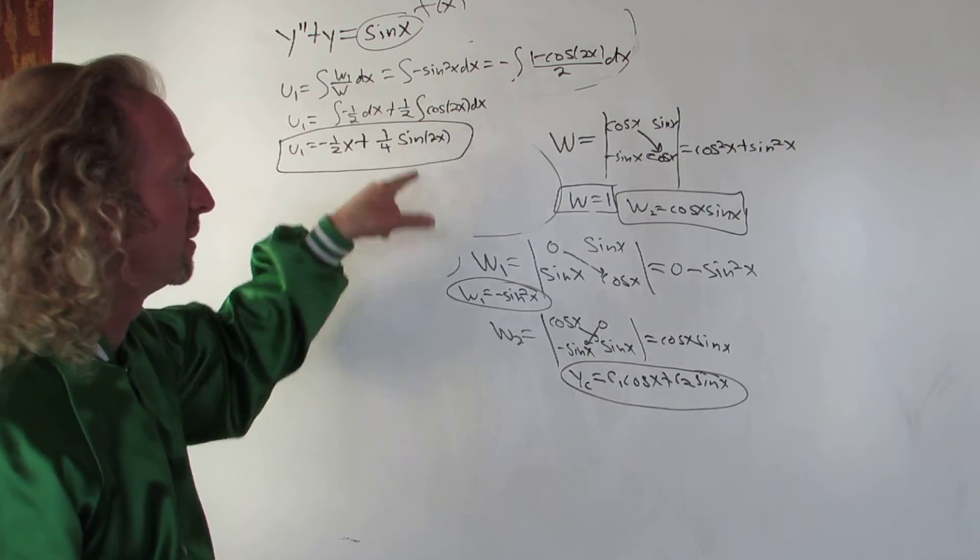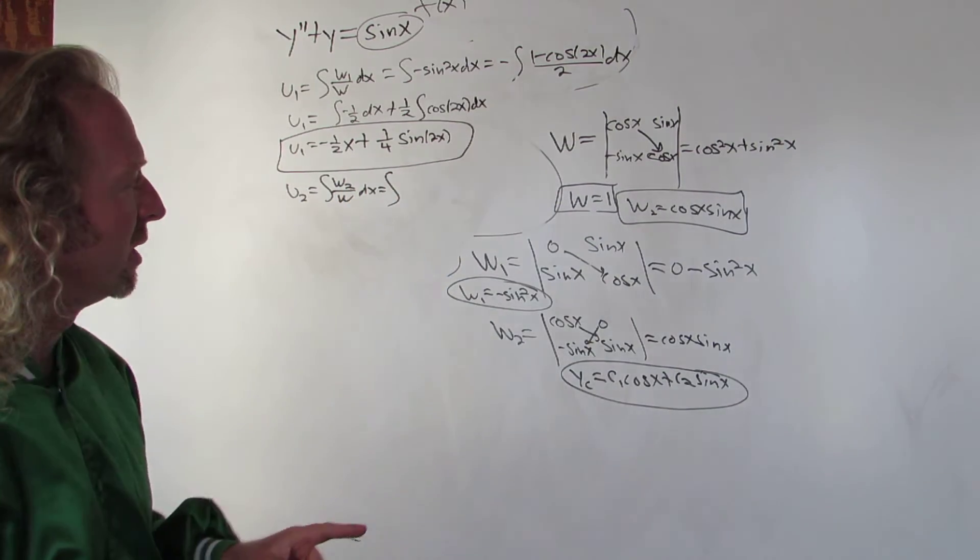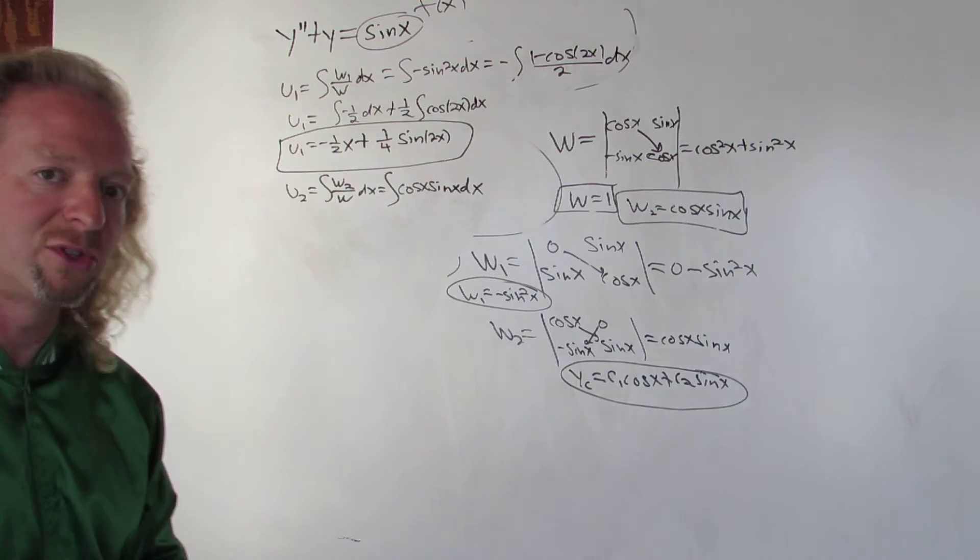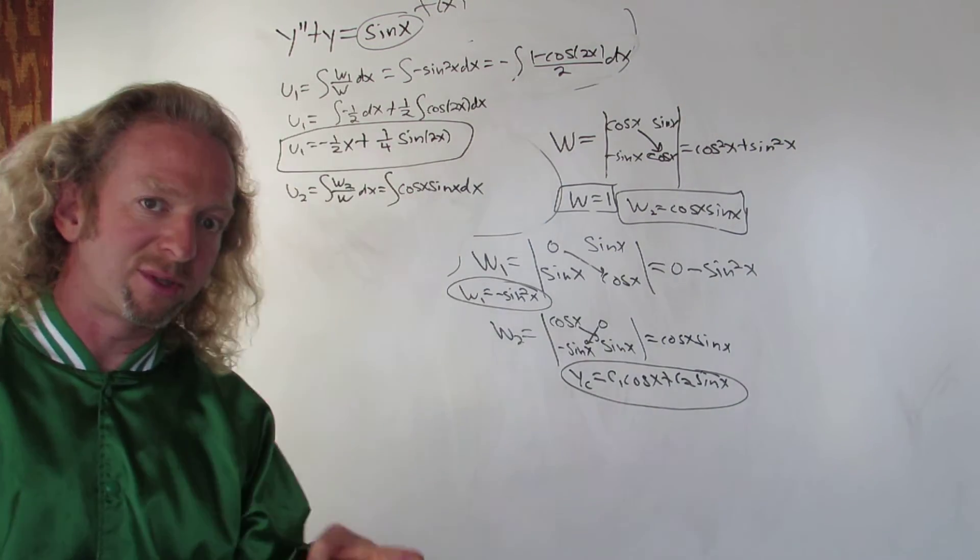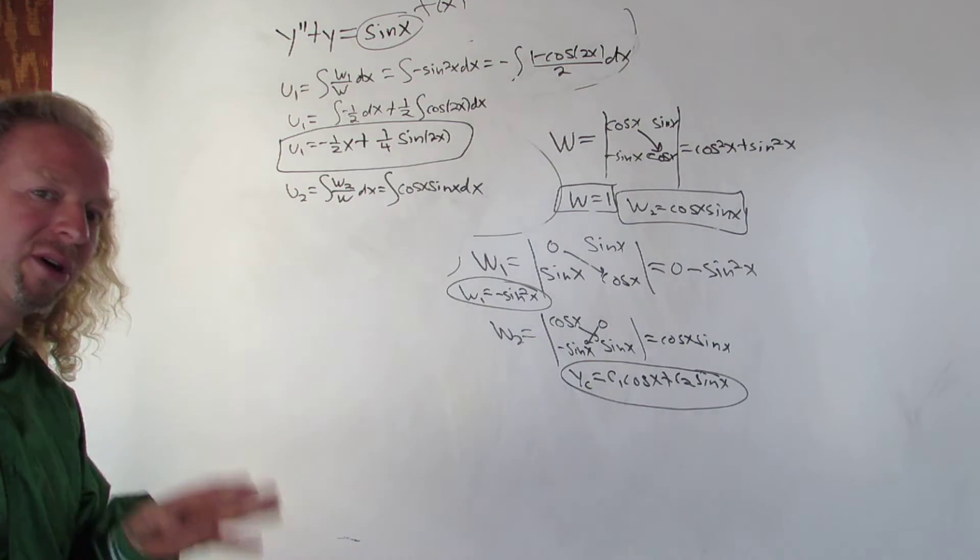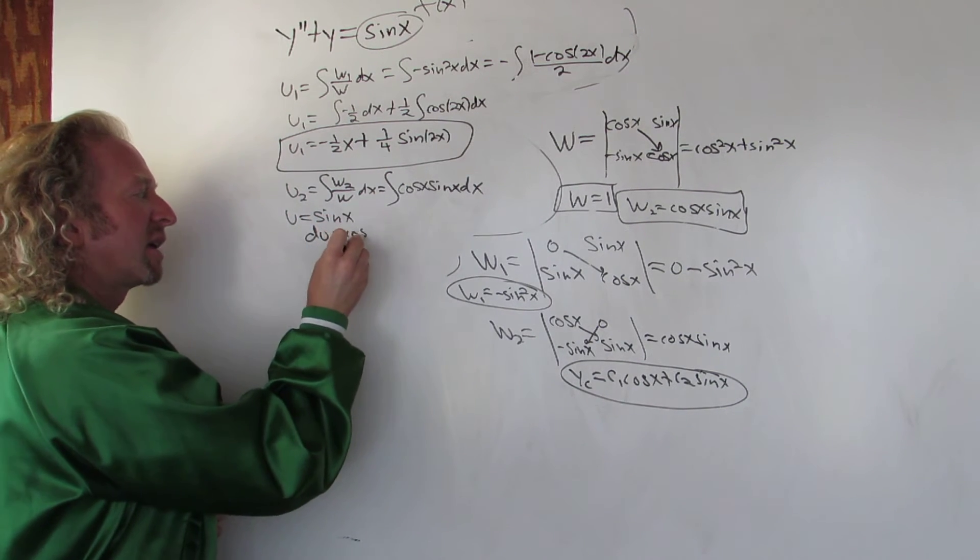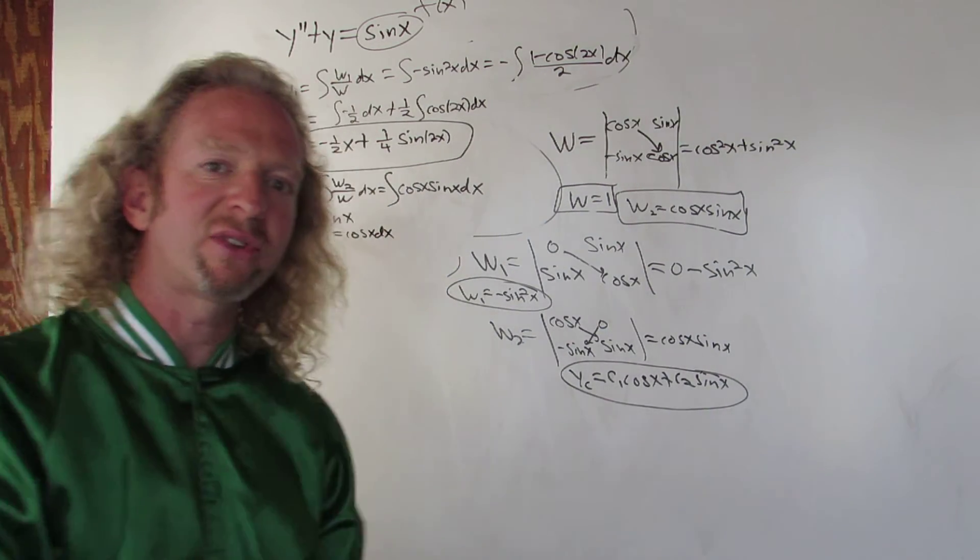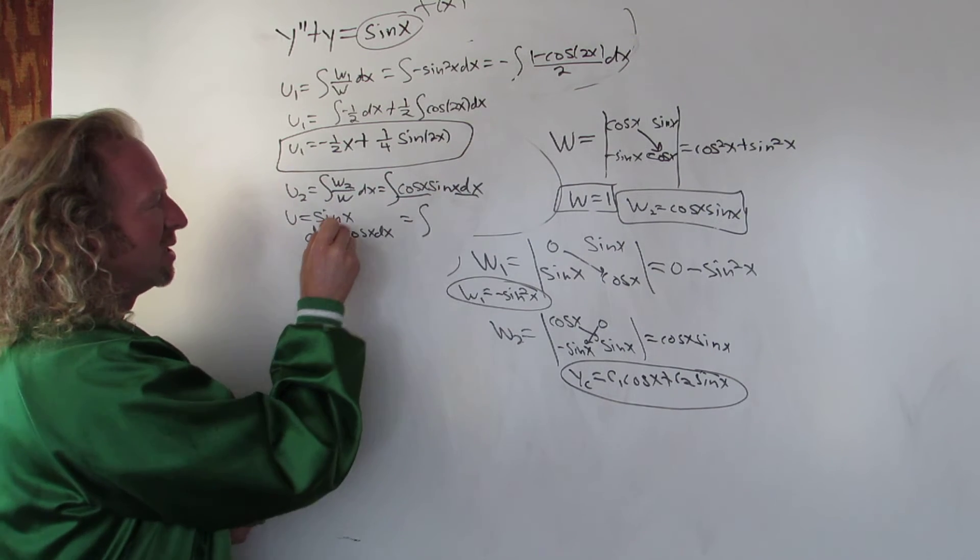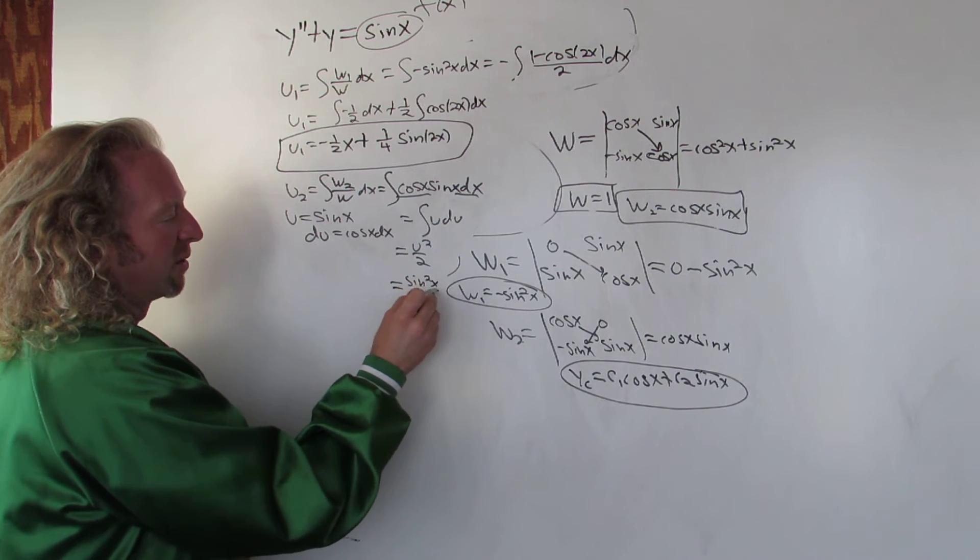Don't worry about the plus c. That's u1. To integrate cosine 2x, you just divide by the 2, and ask yourself, what's a function whose derivative is cosine? Sine. u2 is w2 over w dx. So w2 is right here, so it's cosine x sine x dx. You can make a u substitution by letting u equal cosine x or sine x, or you can use the identity for sine 2x. Let's just let u be sine. So then du is cosine x dx. This becomes u du. When you integrate this, it's u squared over 2 plus c. Let's ignore the constant. u is sine, so it's sine squared x over 2, and that's u2.